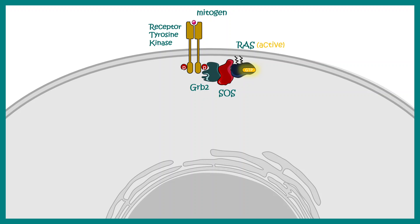If you are wondering why these proteins have names like SOS and GRB2, then you should watch the video linked in the description. It talks about the discovery of SOS and the RAS MAP kinase signaling pathway. However, let's focus on this pathway for a while.